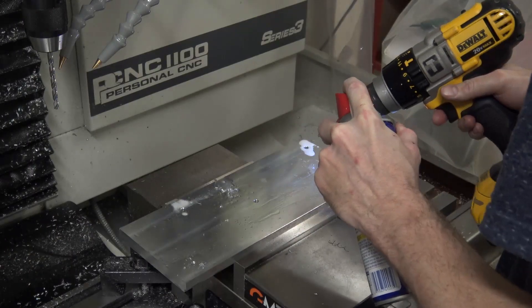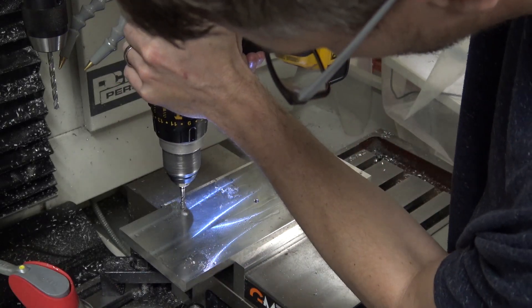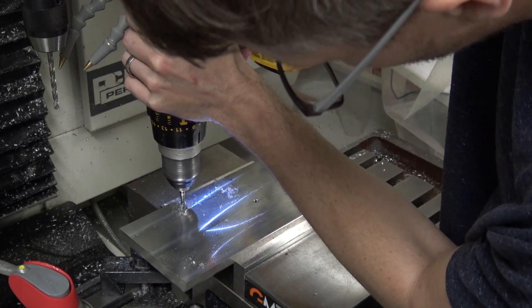In order to tap them, I'm just using a spiral flute quarter-twenty tap, just chucked in the drill. This usually works pretty good. I've snapped a lot of smaller sizes off, but quarter-twenty seems to work pretty good.